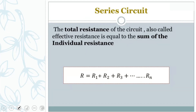Finding the effective resistance means simplifying the circuit. To find the resistance that affects the circuit, you add all resistances together since they are in series.